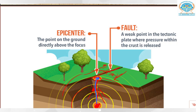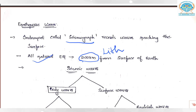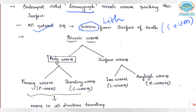Two important points about epicenter: it is always on the surface and is directly above the focus. Now let us see what types of earthquake waves exist. The instrument which records earthquake waves is known as a seismograph, placed in different locations. All natural earthquakes happen in the first 200 kilometers from the earth's surface — the lithosphere, which is the crust plus upper mantle. Seismic waves are divided into two types: body waves and surface waves.